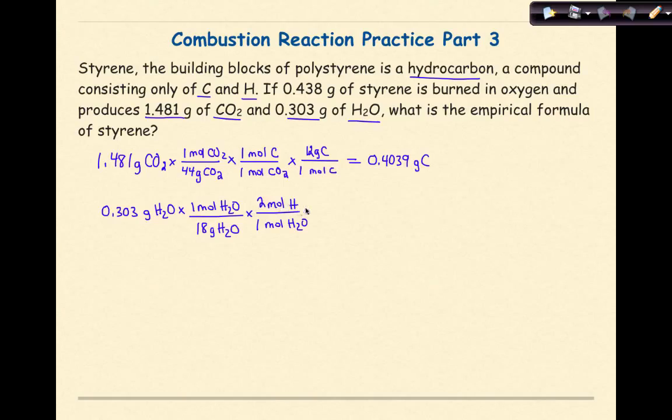So we know that 1 mole of H2O is equal to 2 moles of hydrogen. And this is very important to realize the ratio of hydrogen to oxygen here is 2 to 1. So in every 1 mole of water, there will be 2 moles of hydrogen. And then finally, we know that 1 mole of hydrogen is equal to 1 gram of hydrogen. And if we work this out for our final answer here, we get 0.03367 grams of hydrogen.